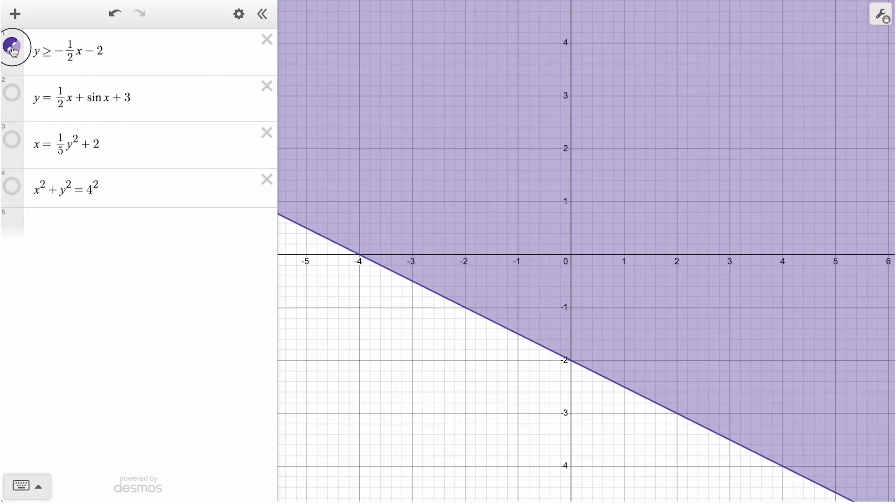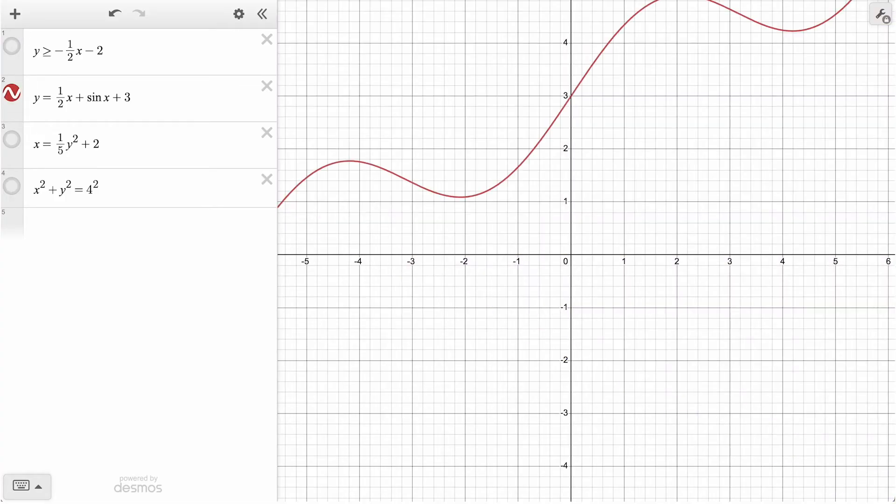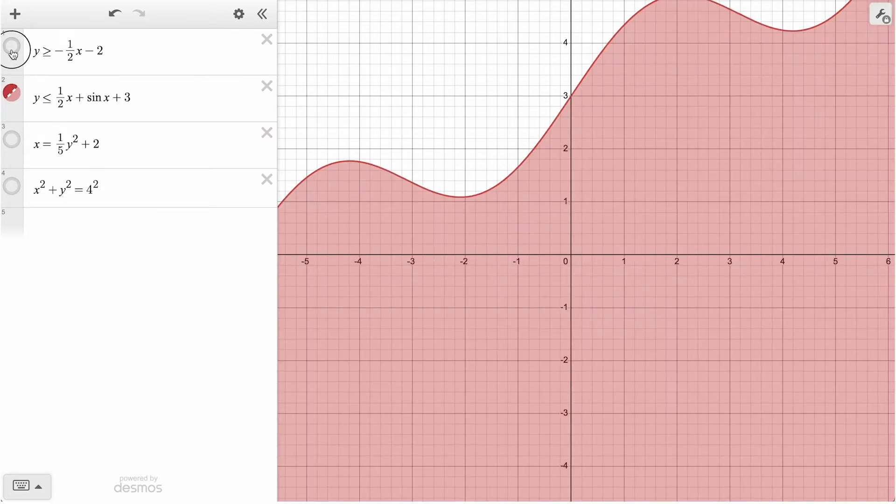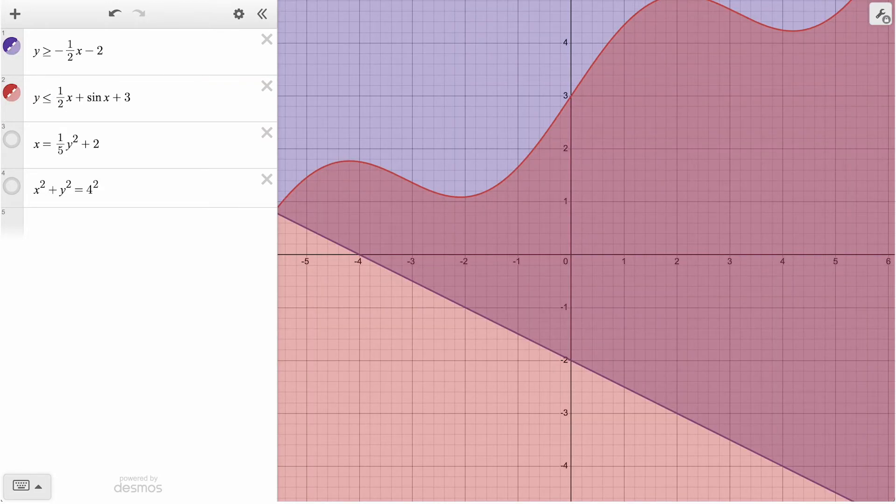Looking at our curving sine function next, we can use this same strategy to shade below this function with a less than or equal to symbol. Notice how where our two shaded regions overlap, we see a darker shading representing their intersection.